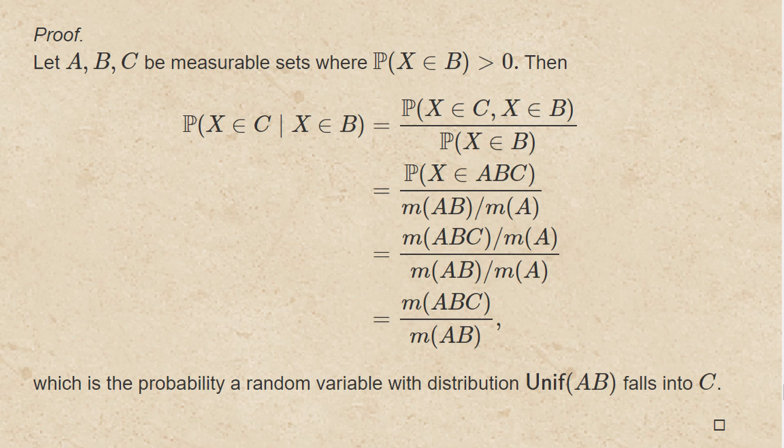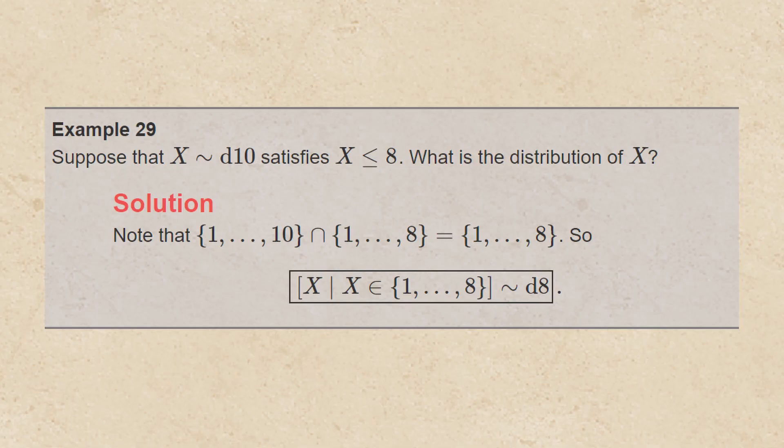As an example, suppose I roll a fair 10-sided die and notice the number is less than or equal to 8. What is the distribution now? Starting with integers from 1 up to 10, intersected with integers from 1 up to 8, I get the integers from 1 up to 8. So x conditioned on x being at most 8 is uniform over the integers from 1 up to 8 — the same as a roll of a fair 8-sided die.